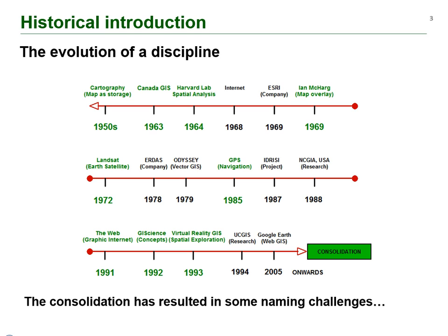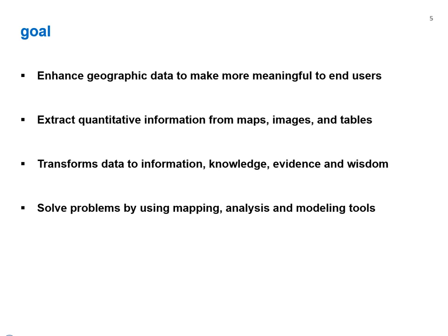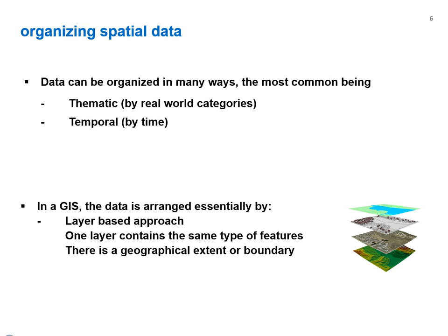We will use the term GIS to mean either a system or a science perspective, depending on the context. A number of key elements make up a GIS. These include people, software, procedures, hardware, and data. But this data is a special type of data called spatially referenced data. Now that we know what a GIS is, one of the primary goals of a GIS is to transform high quality data into useful evidence to support problem solving and decision making. For all practical purposes, the GIS can be considered as a specialized software tool that manages our spatial data.